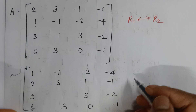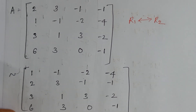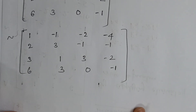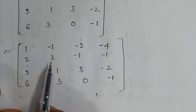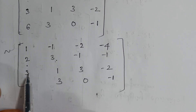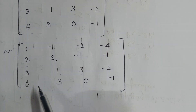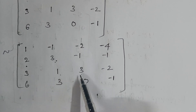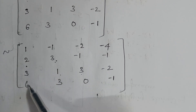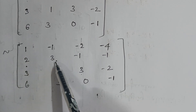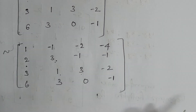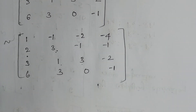Now I have to make the elements below the diagonal zero — like a triangle. The elements below the leading diagonal have to be zero. So I need to perform more row operations to achieve that triangular form.